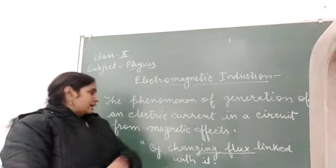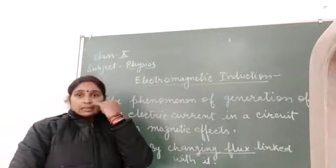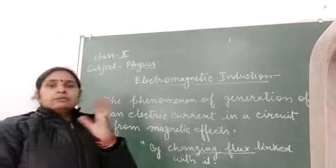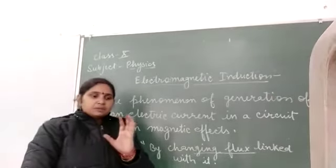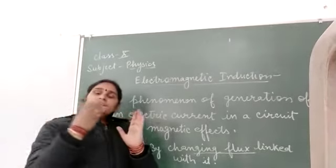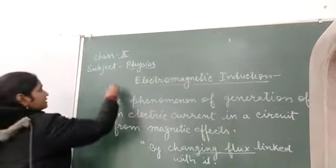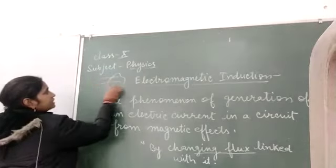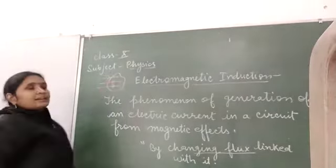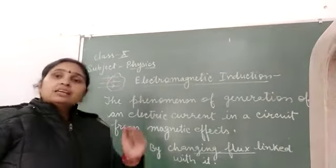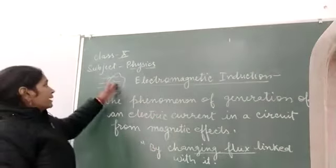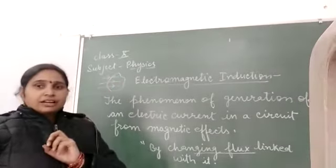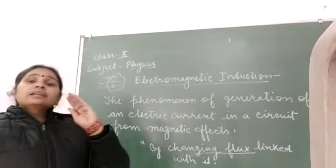Because of the magnetic flux. Now what is magnetic flux? When the term magnetic flux comes, how can we define magnetic flux? Magnetic flux means whenever magnetic field lines are passing through a certain area. Suppose we are considering this is an area and some magnetic field lines are passing through that, then this is known as magnetic flux. The number of magnetic field lines passing through a certain area is known as magnetic flux.